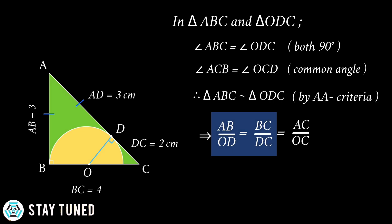Now we would focus on the first two equality of ratios. Substituting the values gives 3 upon OD is equal to 4 upon 2, which simplifies to give 4 times OD is equal to 3 times 2, which finally gives OD is equal to 3 upon 2 cm.